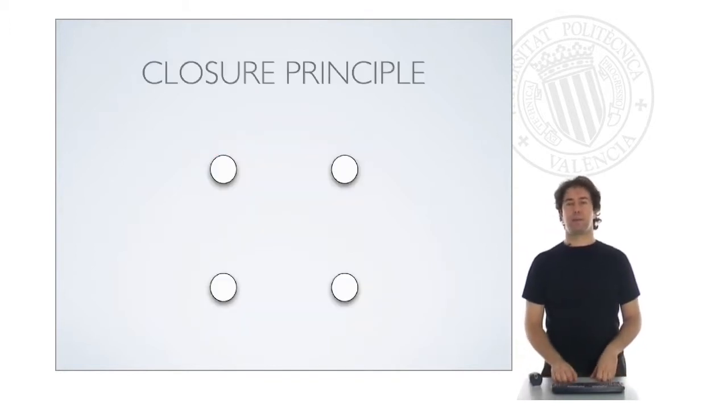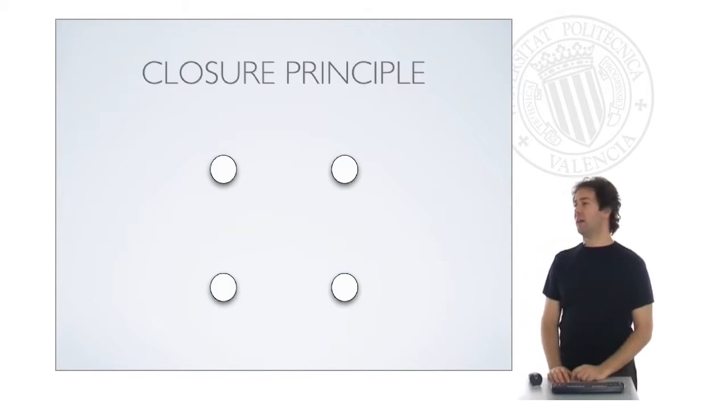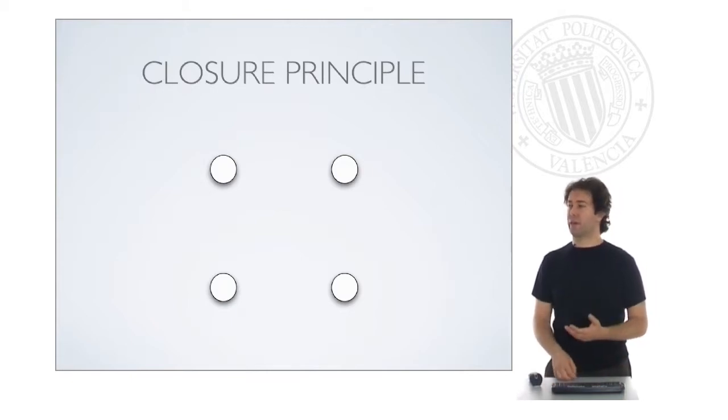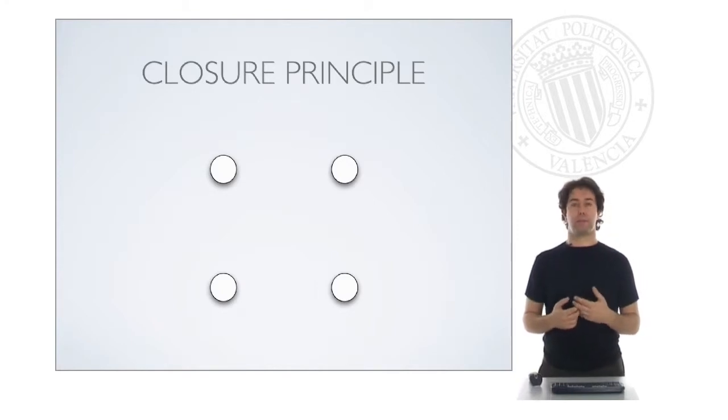The Closure Principle is apparently quite simple. Here you can see four different circles. In this configuration, the tendency of the human perception system is to see a square. Here we see a square, even though the square is not drawn, there are no lines drawing a square, but we do see a square because we have the vertices.